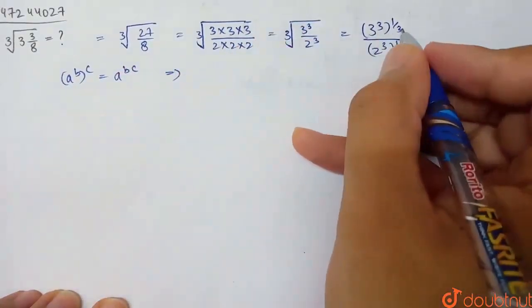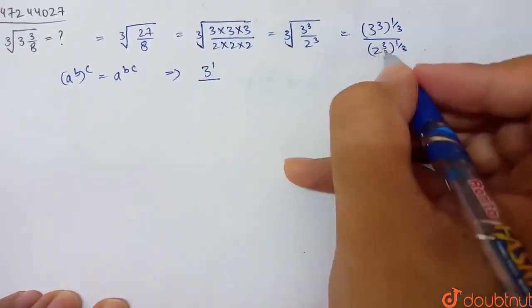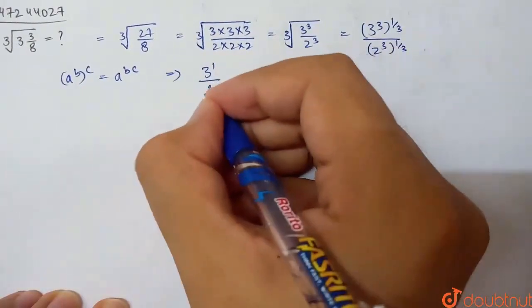So power 2 multiplied, 3 into 1 by 3 is 1. So 3 power 1 by 2, 3 into 1 by 3, that is 1 again. So it's 2 power 1.